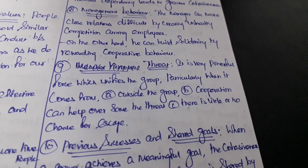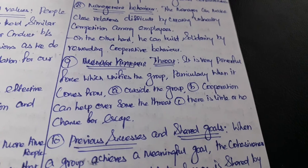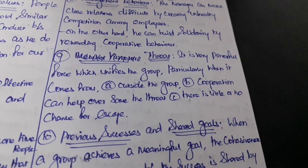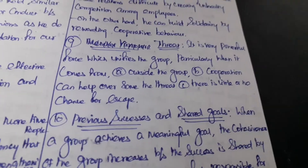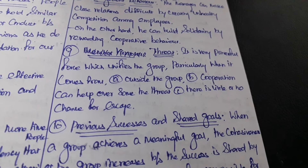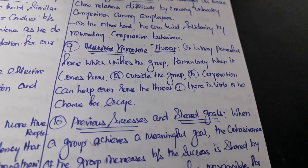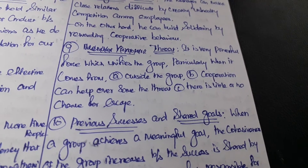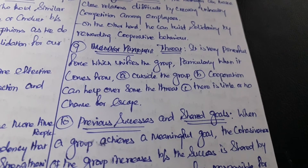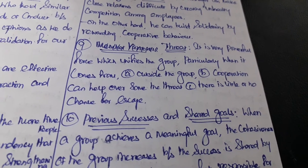The next factor is threat. It is a very powerful force which unifies the group, particularly when it comes from outside the group. Cooperation can help overcome some threats, and there is little or no chance for escape. If the manager threatens members to perform a specific job, the group members will cohere with each other to complete that task, through which group cohesiveness will increase to a greater extent.